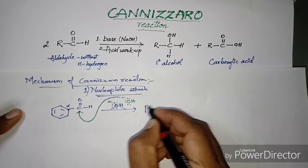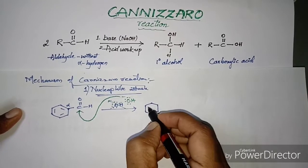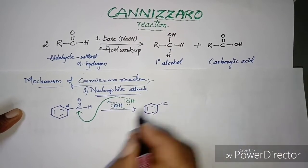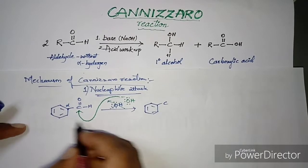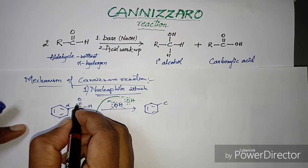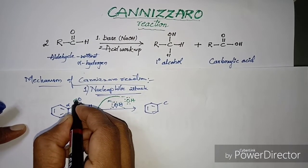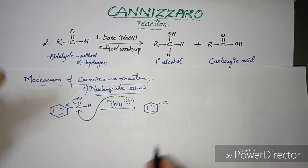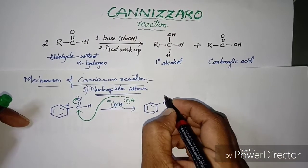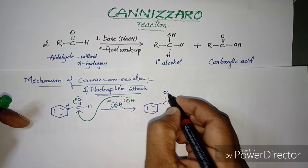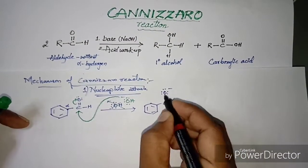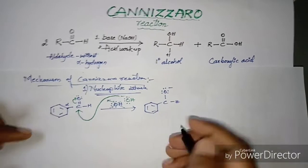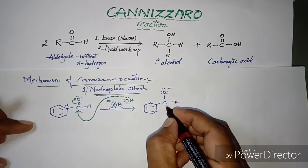As a result of the nucleophilic attack on the carbonyl carbon, a new species forms. The pi bond electrons are pushed over to the oxygen atom — oxygen already has two lone pairs, and the incoming pi bond electrons add a third lone pair. This is how the new tetrahedral intermediate species forms.